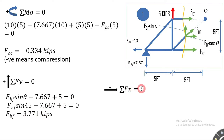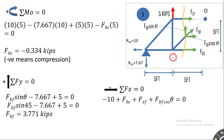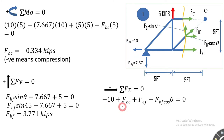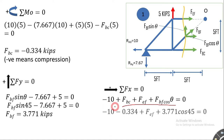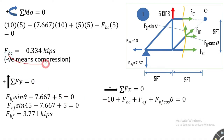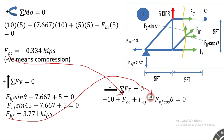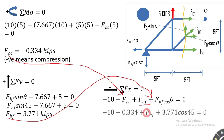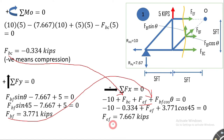Applying ΣFx = 0 with rightward positive, there are four forces in the x-direction: RAx, FBF cos θ, FBC, and the 10-kip force. Substituting the known values of FBC and FBF and solving yields FBC = 7.667 kips.